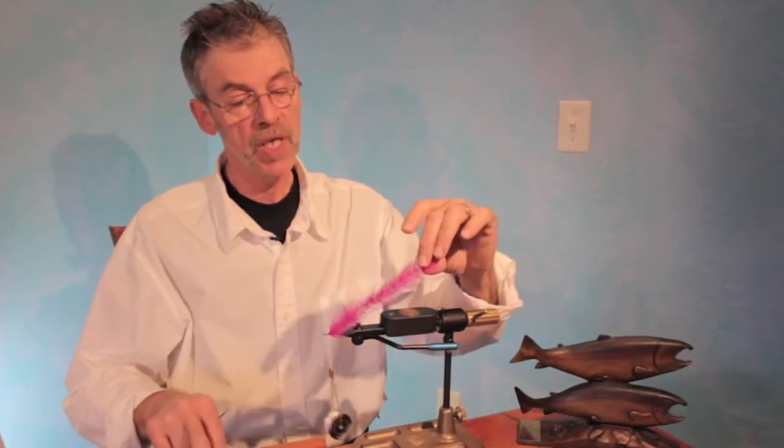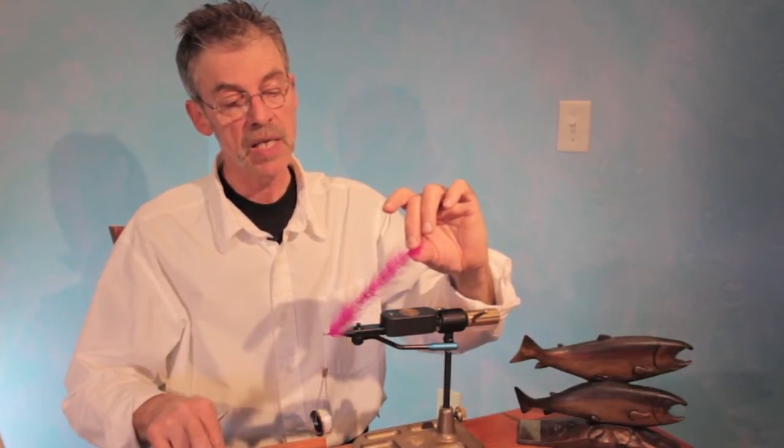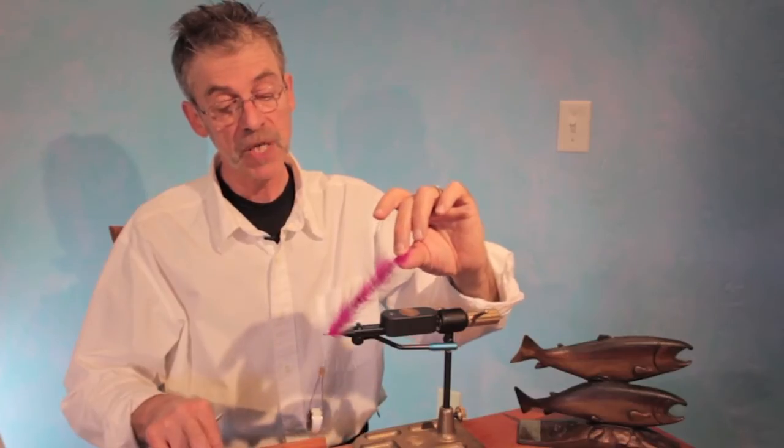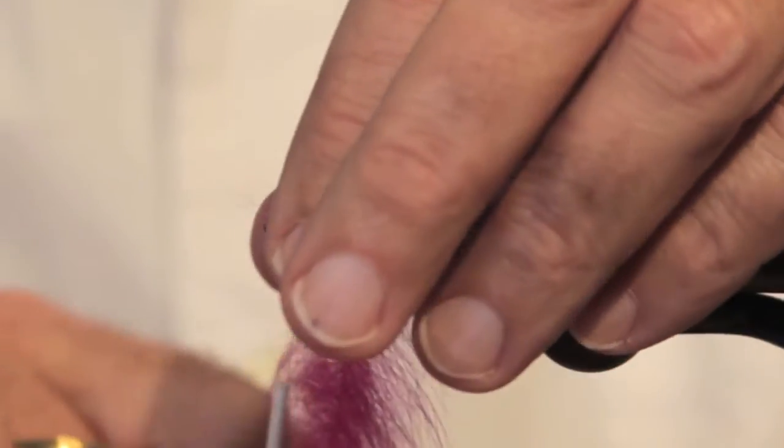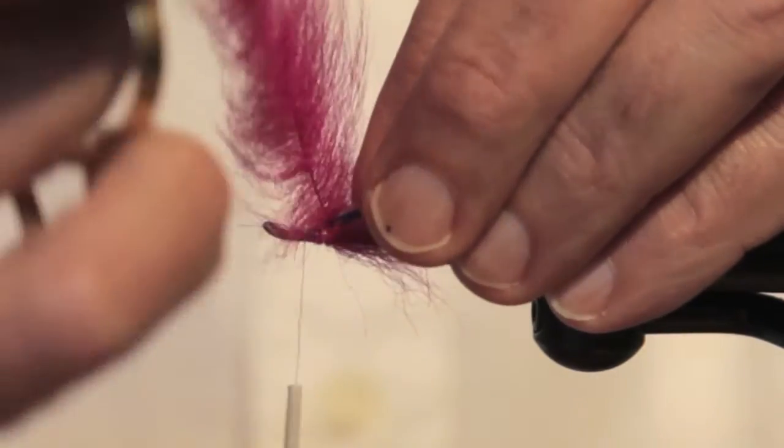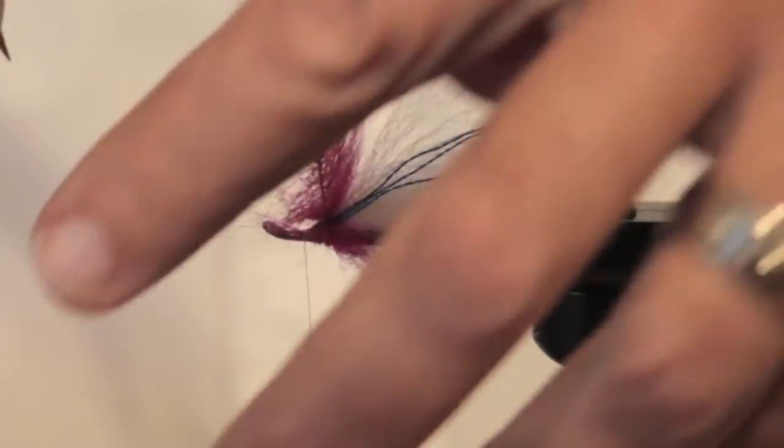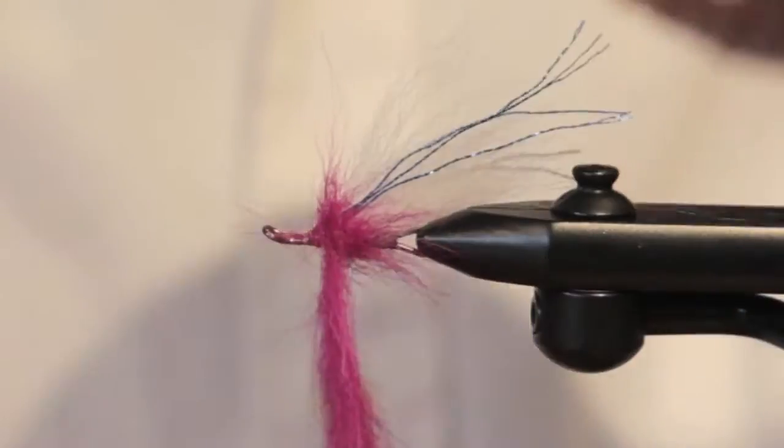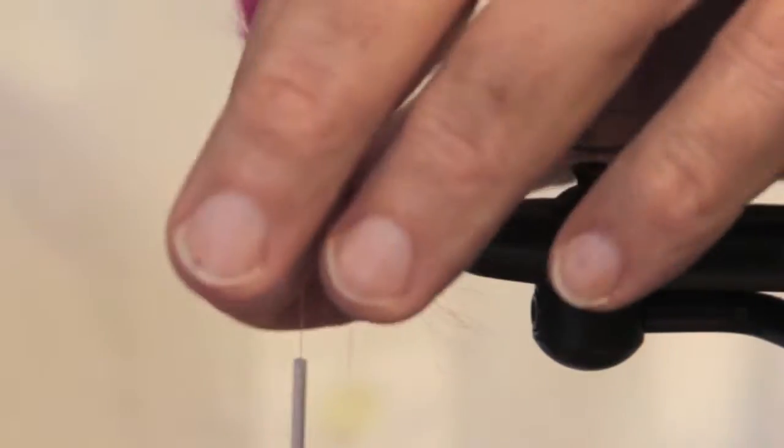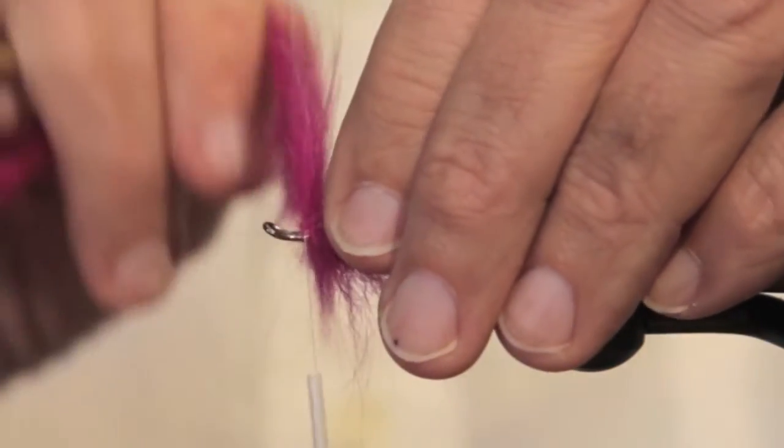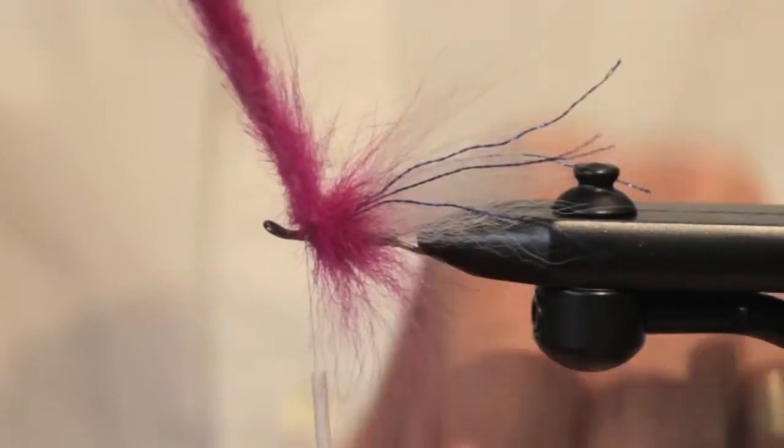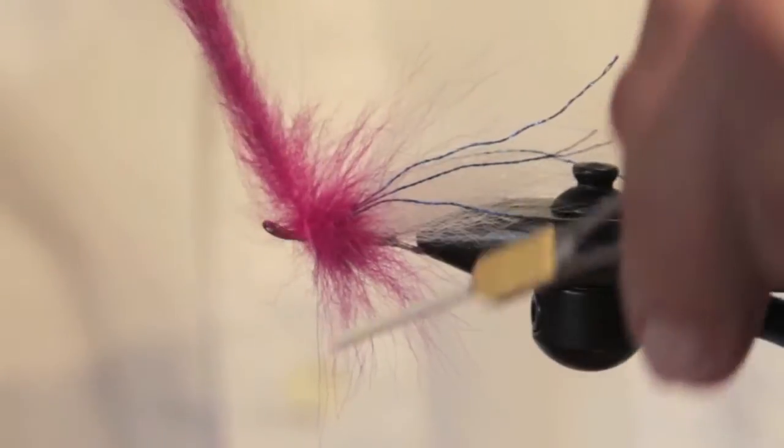I'll show you three ways of doing it. This is an EP Foxy brush, natural fibers twisted on stainless steel wire, very easy to use, comes in some great colors. Look at how hard that is to tie that collar. This is tough stuff.